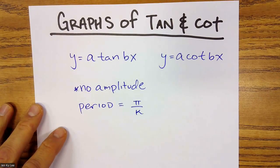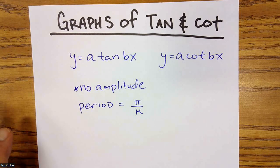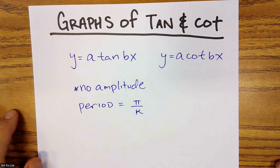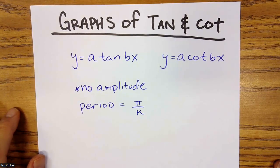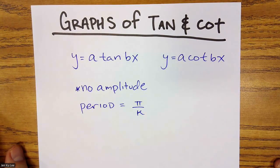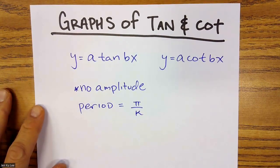Welcome, everybody. This is the graphs of tangent and cotangent. Graphs of tangent and cotangent are separate, and they're somewhat unusual from what we know about sine, cosine, cosecant, and secant. So get away from thinking sine and cosine, cosecant and secant — there's a new way of thinking.